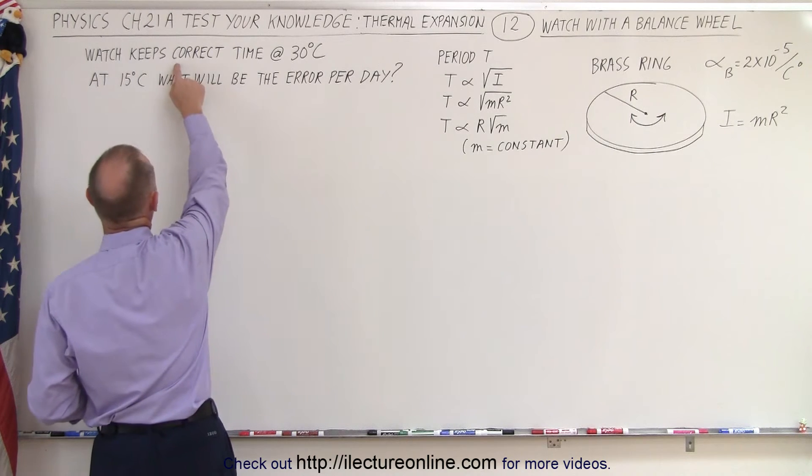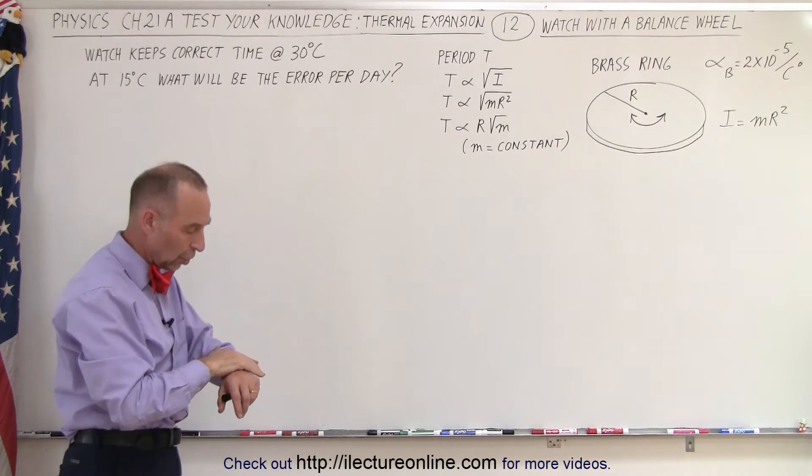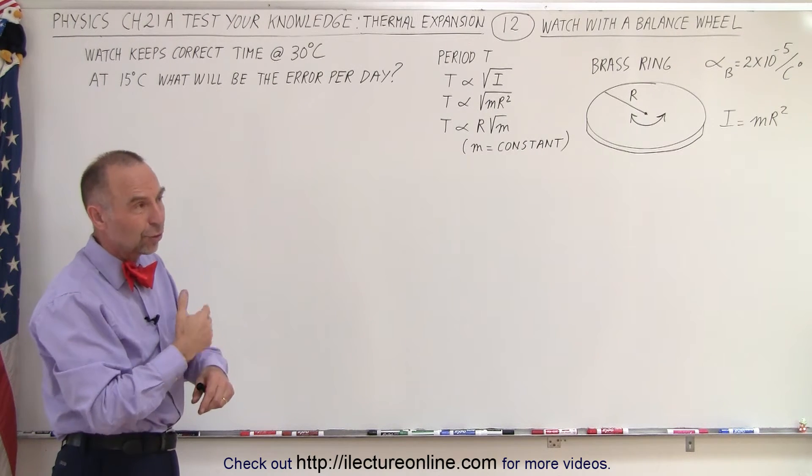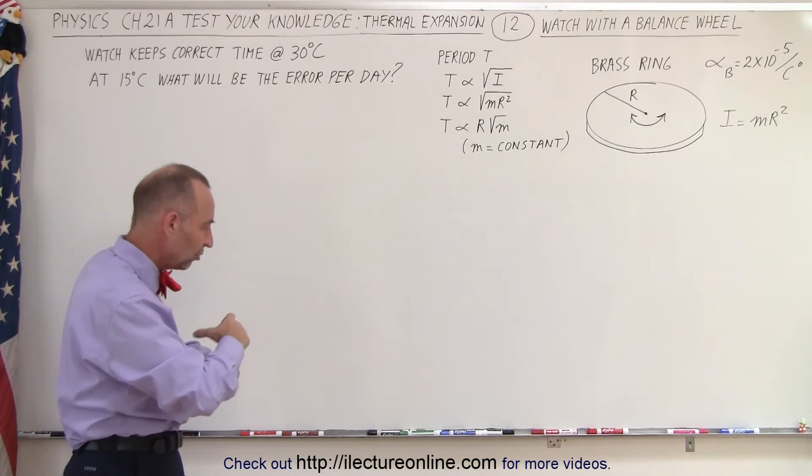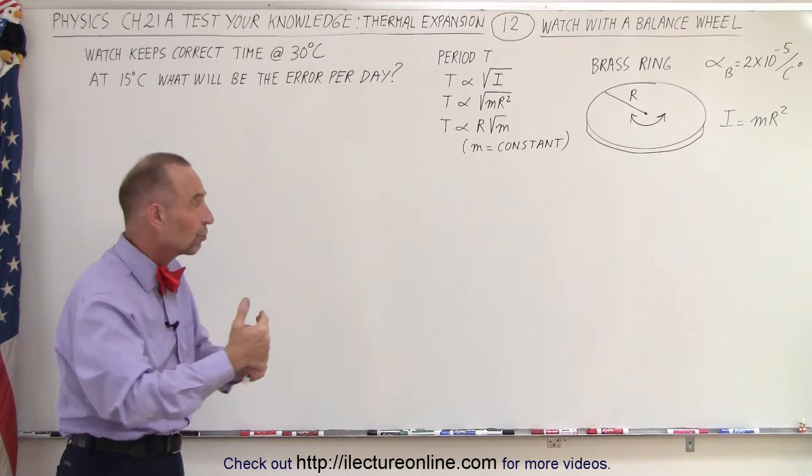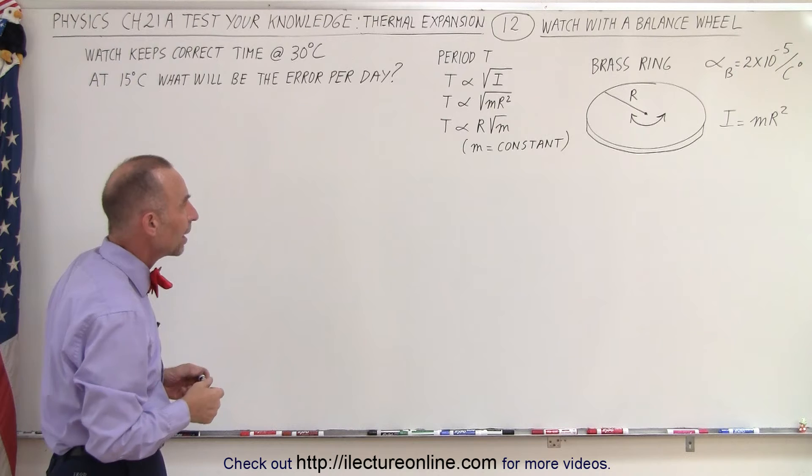Now notice that they tell us that the watch keeps correct time at 30°C. That would be when it's connected to your wrist. And of course, your wrist is about 30°C on the outside. That would be a typical temperature. And so when the watch is removed from a wrist and the temperature drops to 15°, what will be the change? What will be the error per day?